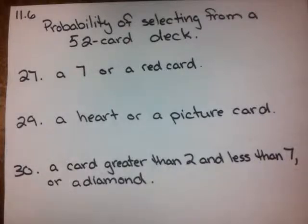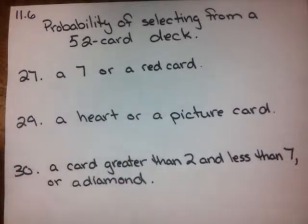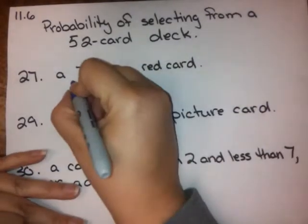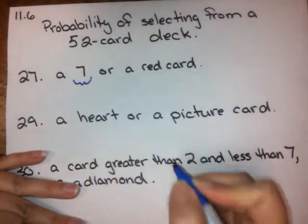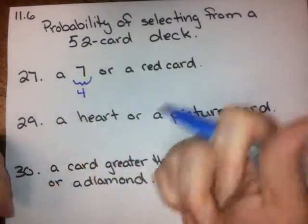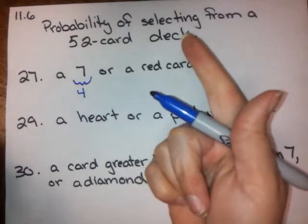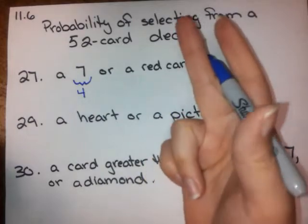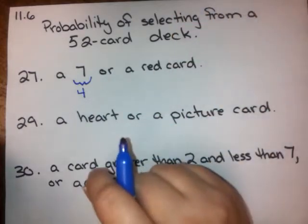Number 27 is asking us what the probability is of selecting a 7 or selecting a red card. So the first thing let's do is figure out how many 7s there are in the deck. There are 4 of them: 7 of hearts, 7 of clubs, 7 of diamonds, 7 of spades.